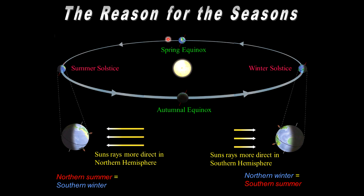At the equinoxes it's halfway in between, and the daylight — the amount of sunlight — is exactly 12 hours. In fact, that's true everywhere on Earth. So that's the reason for the seasons.